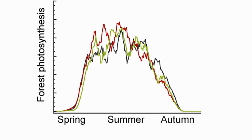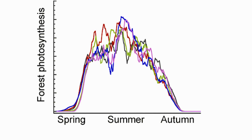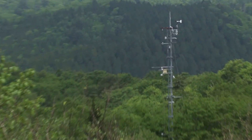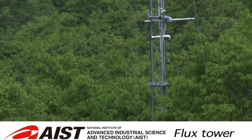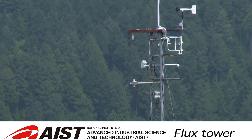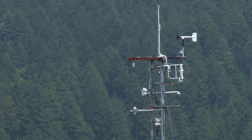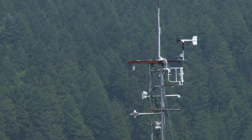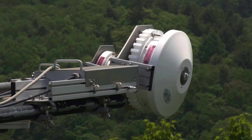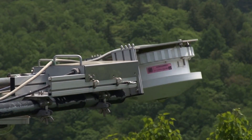Photosynthesis begins in spring, matures in summer, and declines in autumn. I have been studying the ecophysiological function of forest canopy and its dynamics under climate change, by collaborating with many researchers in atmospheric carbon dioxide, remote sensing, and modeling.